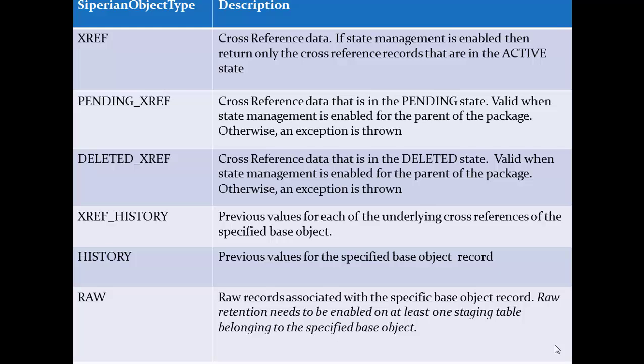History of cross-reference: provided we have enabled history for the base object, then and only then will the history of the cross-reference be created and returned for all the underlying cross-reference records. History: if you enable history for the base object, the history table will be created for the corresponding base object and the values of the previous records will be provided with this history record.